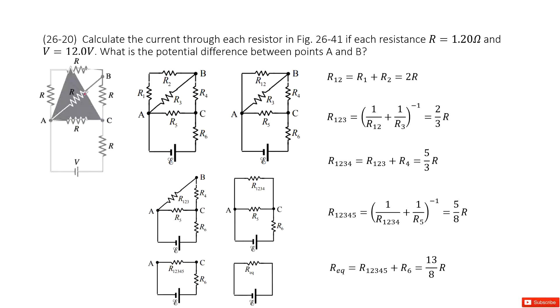So we look at this system. We need to calculate the current through each resistor. Each resistance R is 1.2 ohms and the voltage is 12 volts.